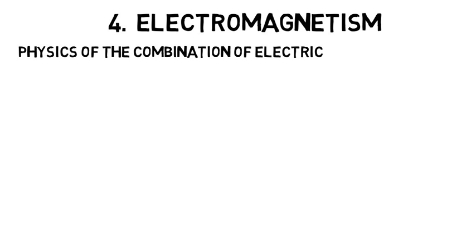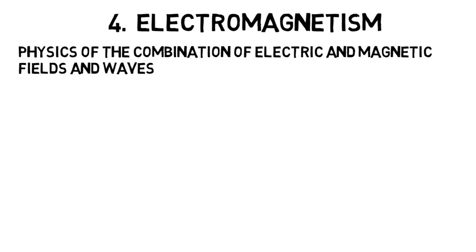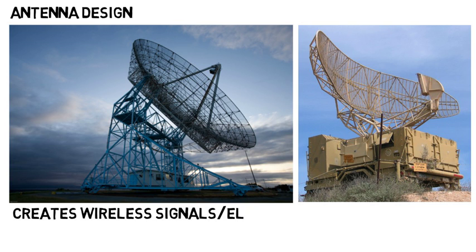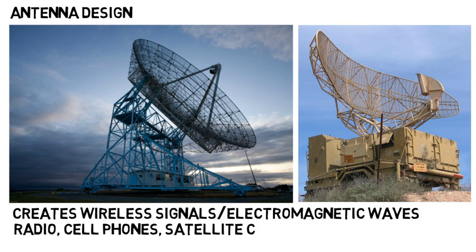Electromagnetism studies the physics of the combination of electric and magnetic fields and waves, like how atoms or particles will be affected in the event of an electric and magnetic field. If you like the electromagnetic waves, a very tangible engineering discipline is antenna design, which is what creates wireless signals or electromagnetic waves. This can be used for radio, cell phones, satellite communication, radar, and so on.